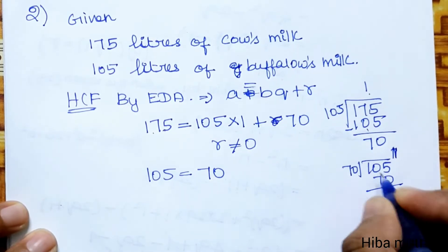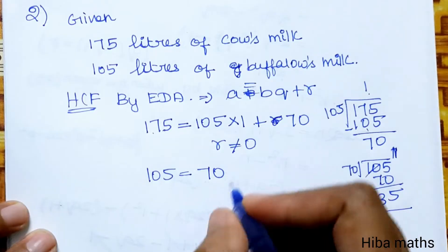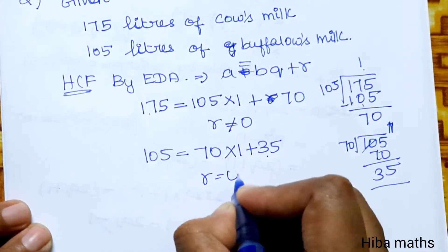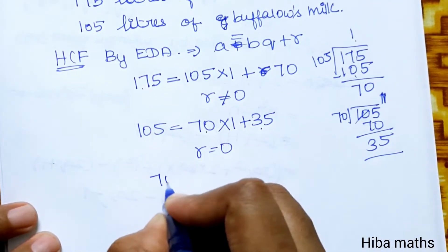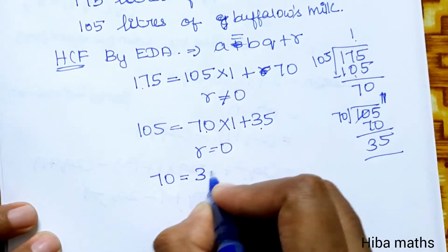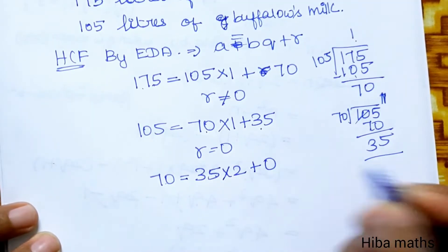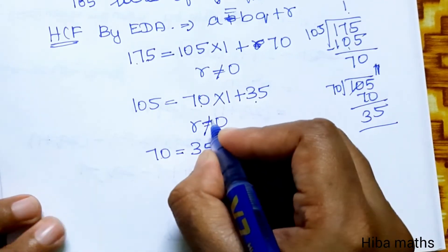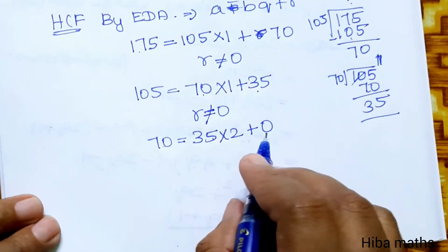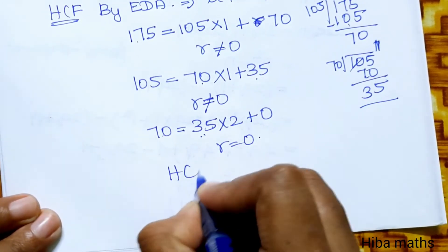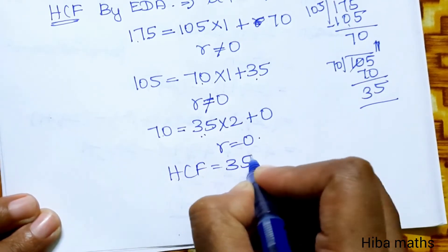Now 70 divided by 35. 70 equals 35 times 2 plus 0. The remainder is 0, so we stop. Therefore, the HCF value is 35.